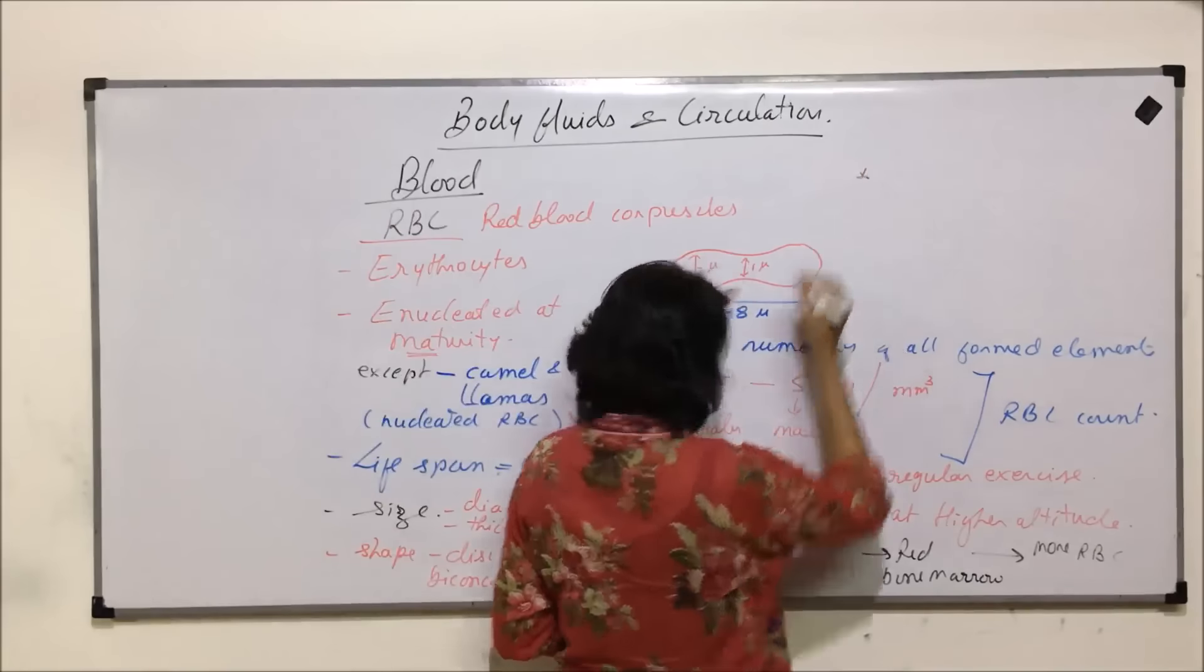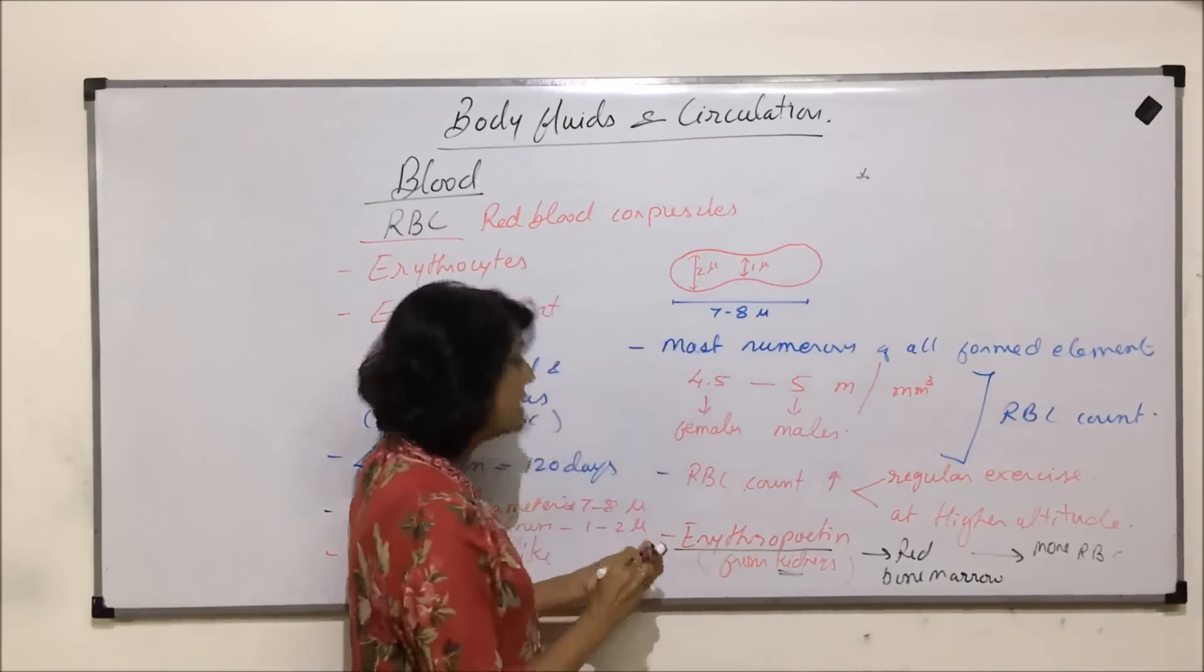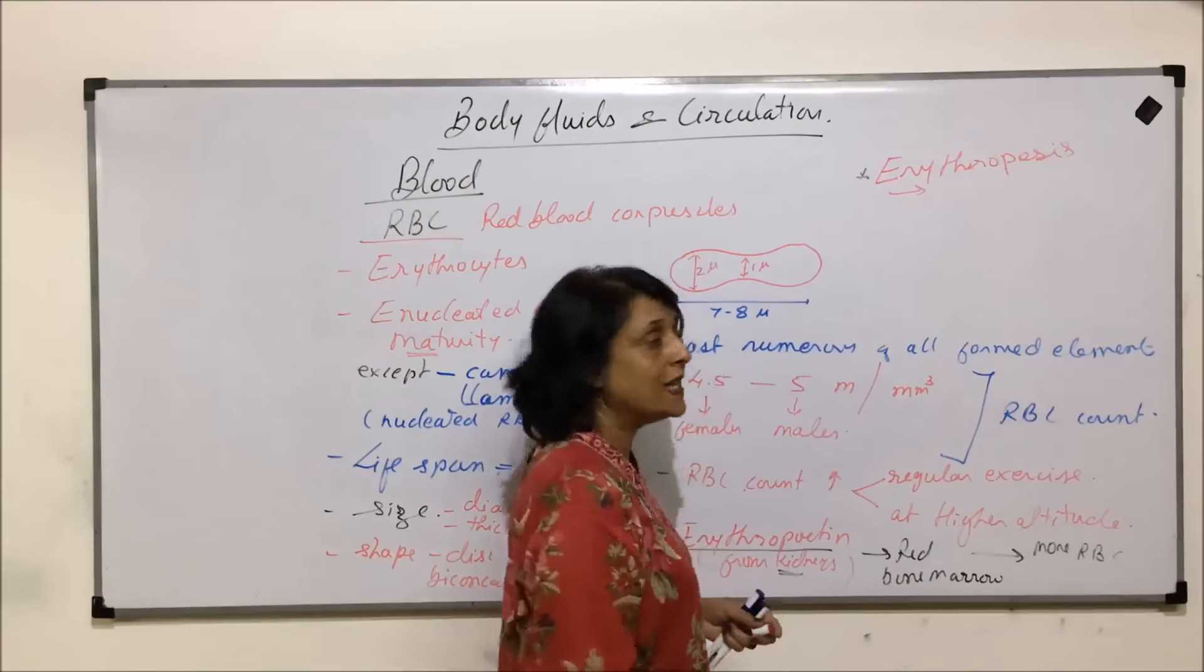Formation of RBC is known as erythropoiesis. Let us write down this word here. This is erythropoietin, the chemical coming from kidney, and erythropoiesis is the process of RBC formation. This is RBC formation which is known as erythropoiesis.